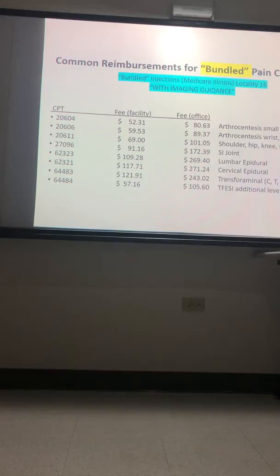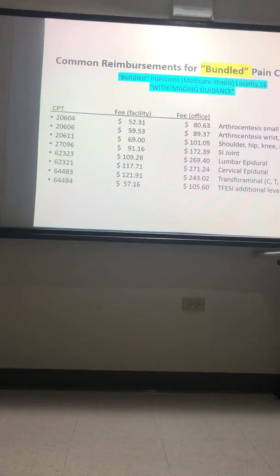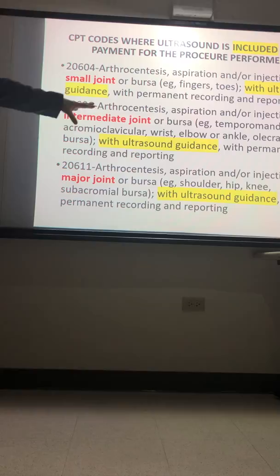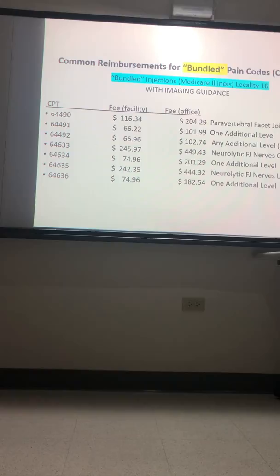Looking at the CPT codes where ultrasound is included — you can inject a joint or a bursa, but the language actually says 'with ultrasound guidance' — you're not going to get an extra fee. Whether you're injecting a small joint, a medium-sized joint, or a large joint, you're not going to get more than just the fee for the procedure. Facet joint injections at one level or additional levels, neurolytic procedures such as radiofrequency of the facet joint nerve, cervical, thoracic or lumbar — all bundled. You don't get paid an extra fee for using either ultrasound or fluoroscopy.